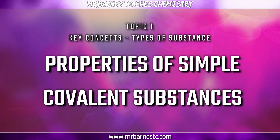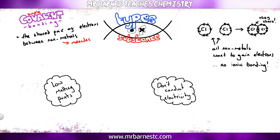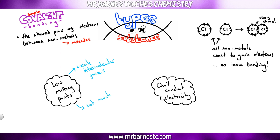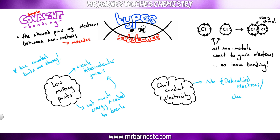The final part of this video focuses on the properties of simple covalent compounds. There are two major properties: they have low melting points and they do not conduct electricity. The reason they have low melting points is because there are weak intermolecular forces between the molecules — these are easy to break so not much energy is needed. It's important to remember covalent bonds themselves are strong, so if you say the bonds are easy to break you will not get the marks — you must say weak intermolecular forces. They don't conduct electricity because there are no delocalized electrons or charged particles free to move, so they cannot carry or pass on a charge.